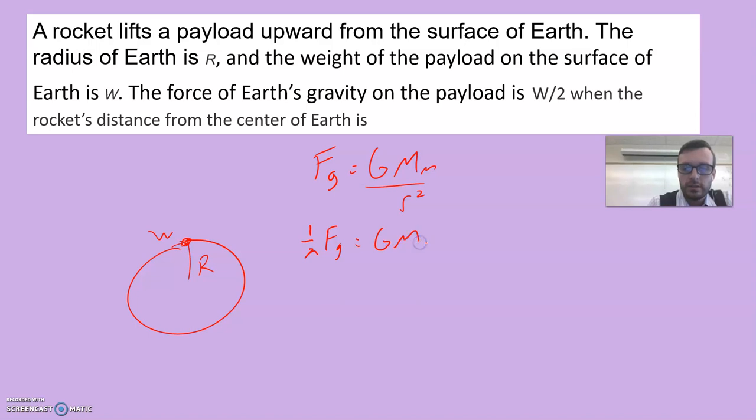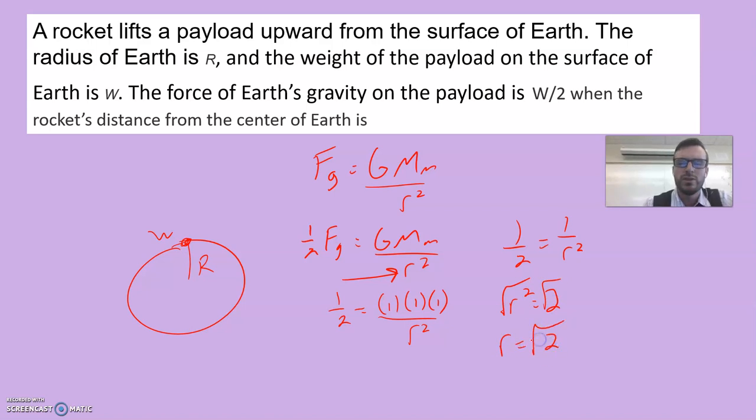The weight is determined by GMm over r². So if I cut the weight in half on the left side, that means that has to give rise to a change in half on the right side. So how much does that thing have to change to make everything else a half? The only thing that changes is r². So the question is, how do we get one half equal to one over r²?